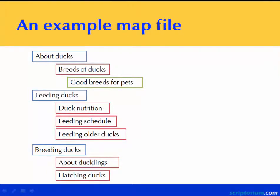Here's an example map file. You can see we've got a hierarchy inherent in how these are put together. About ducks, feeding ducks, and breeding ducks could be thought of as chapter names or section names.